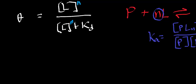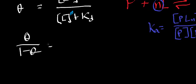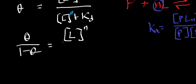What we ultimately want to do is solve for N. We can do some rearrangements of this expression to get theta divided by 1 minus theta equal to the ligand concentration raised to the N power divided by the dissociation constant. And now we can take the log of both sides.